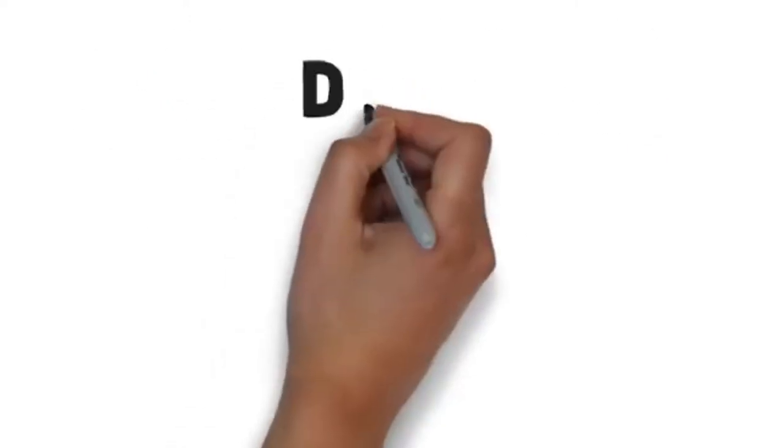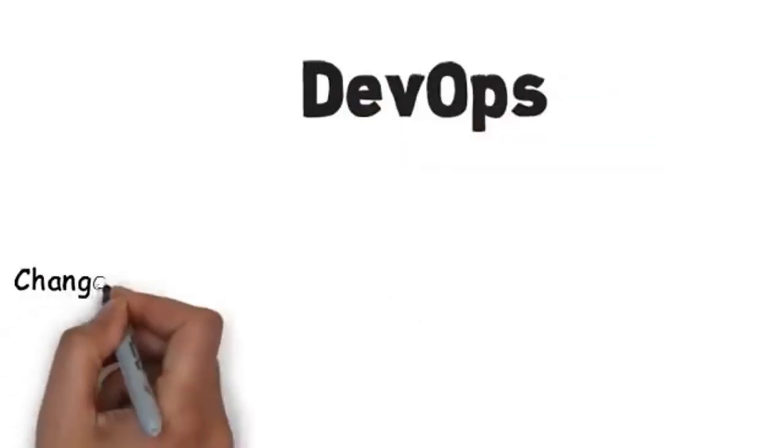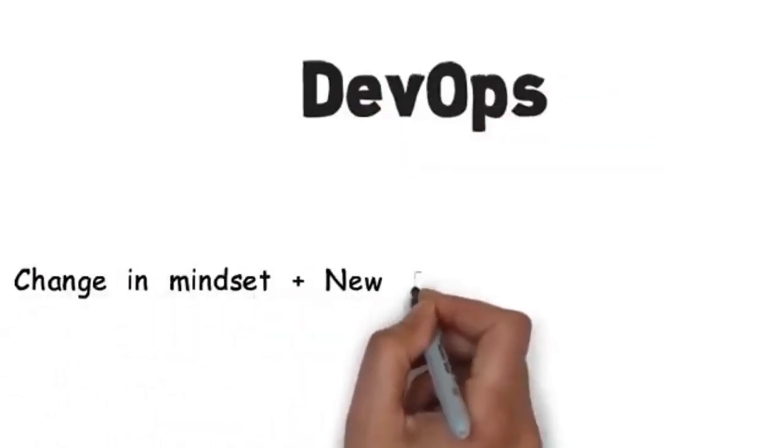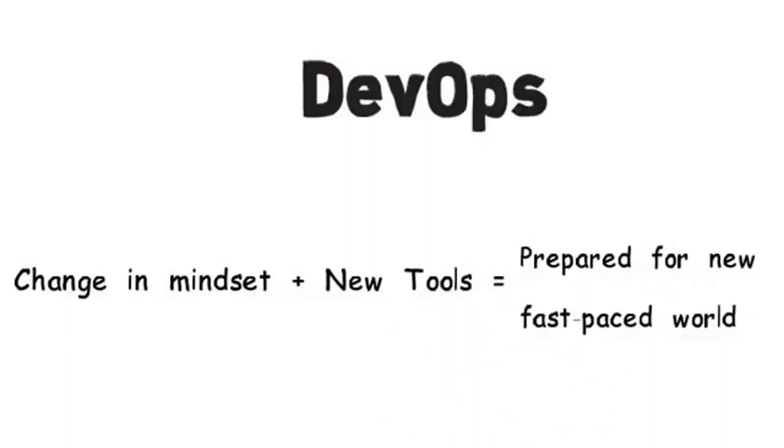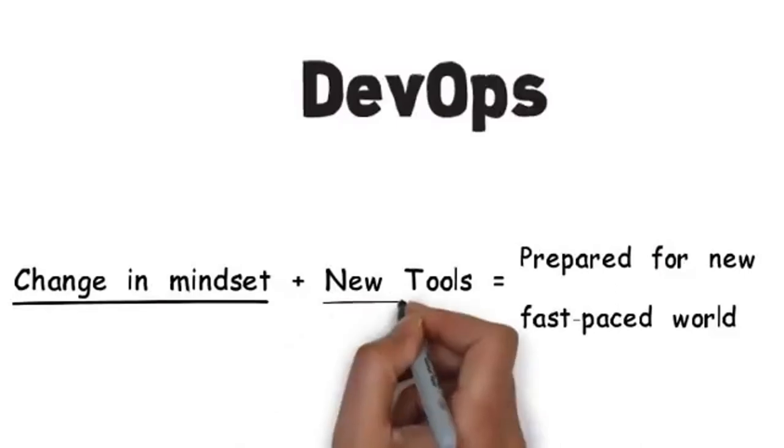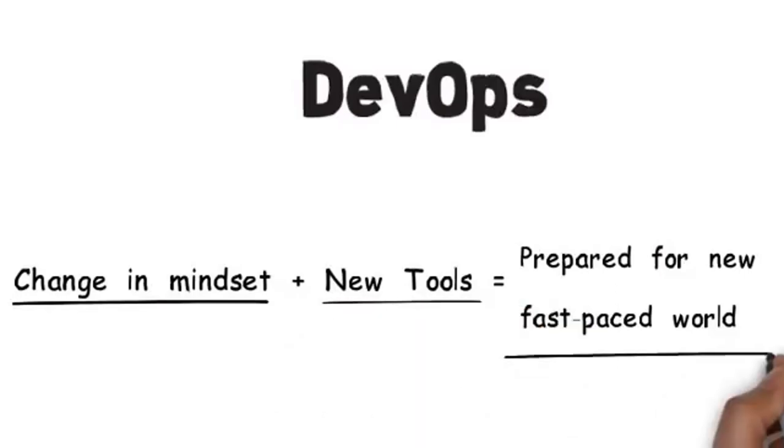How does a DevOps oriented team actually accomplish this? Well, as mentioned before, there needs to be a change in the mindset of the two groups that need to work closer together. The other component to the formula is getting the right tools. New tools are needed in this fast-paced world.